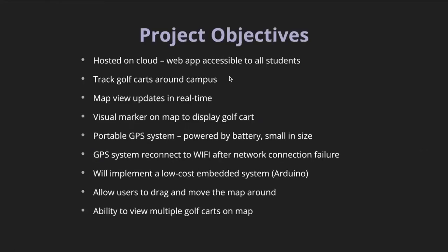Some of the objectives and goals we had: we wanted to make it accessible to all students, host every aspect of this project to the cloud so that golf carts could be tracked around campus, have the map view update in real time for a smooth experience, use a visual marker on the map to display the golf cart, and make the GPS system portable — small in size and battery powered. We also wanted the GPS system to reconnect to Wi-Fi after network connection failure, because there are black spots on campus where reconnecting to the network is really important.